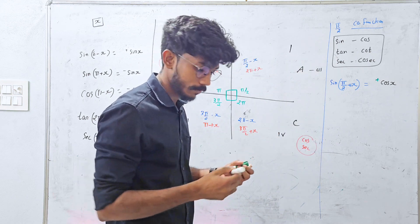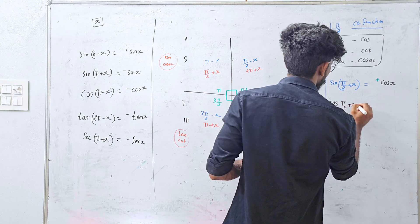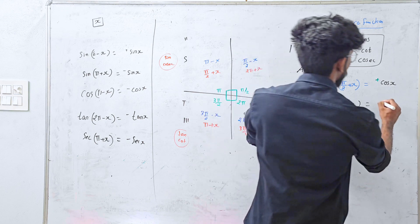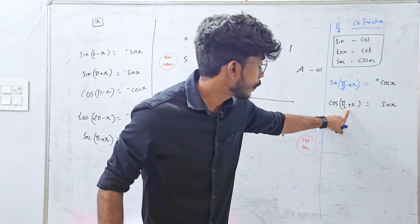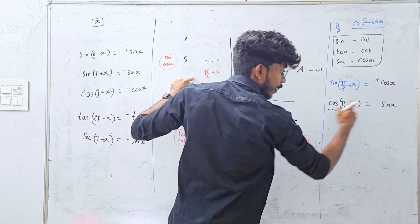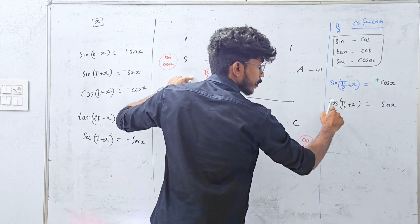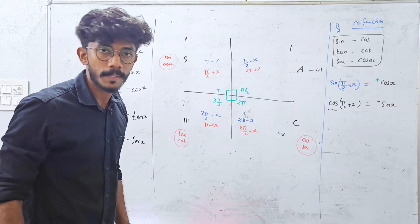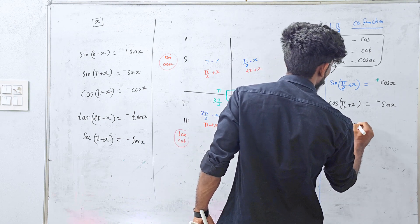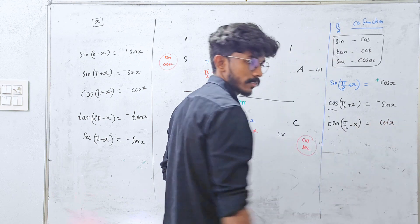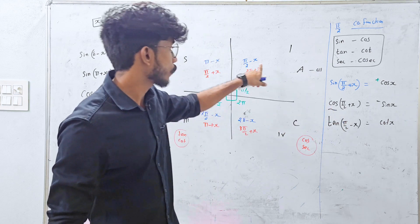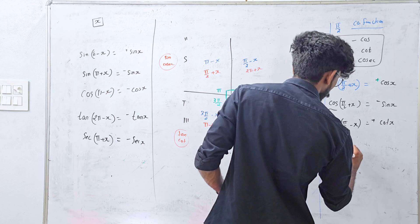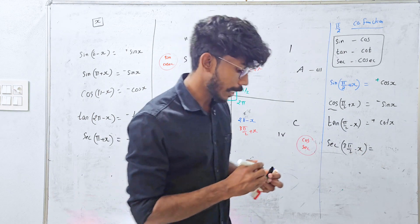Cos(π/2 + x): π/2 is a co-function, so cos becomes sin. The angle π/2 plus x is in the second quadrant, where cos is negative. So the answer is negative sin x. Now tan(π/2 − x): π/2 is a co-function, so tan becomes cot. The angle is in the first quadrant, where tan is positive. So the answer is positive cot x.